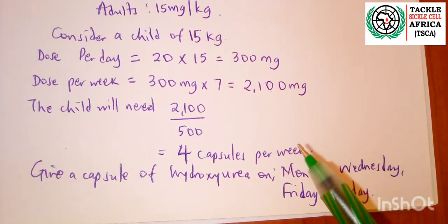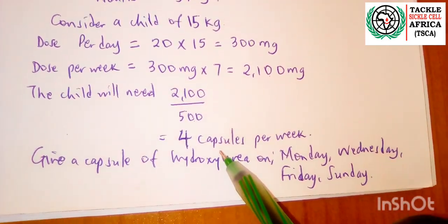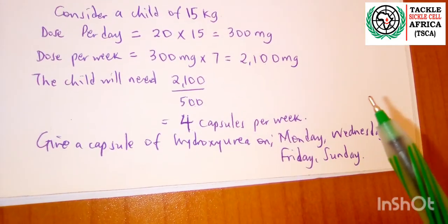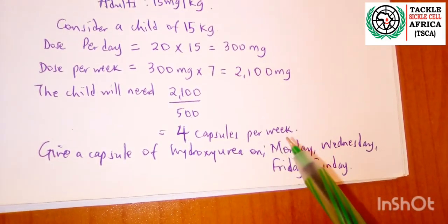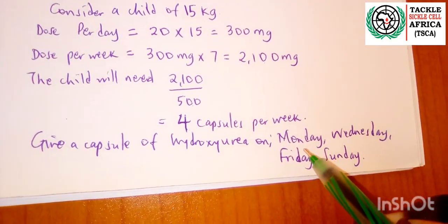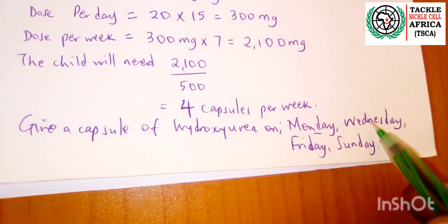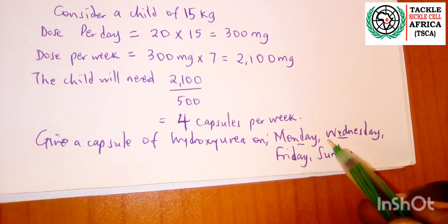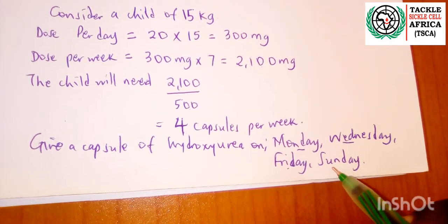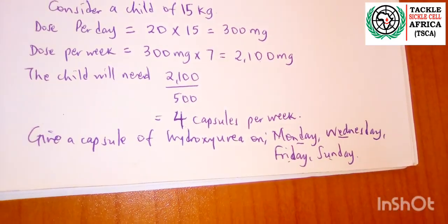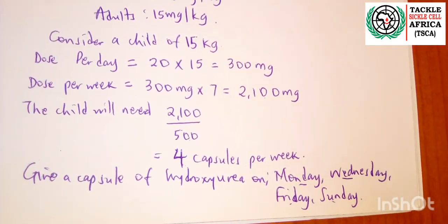Since we have 7 days but only 4 capsules, you need to be creative about how your patient takes these capsules. For example, with 4 capsules per week you can schedule the child to take one on Monday, skip Tuesday, take one on Wednesday, skip Thursday, take one on Friday, skip Saturday, and take one on Sunday — then resume the same schedule the following week.